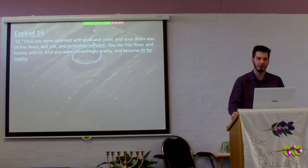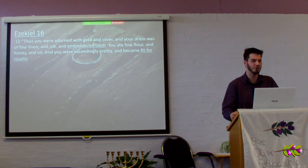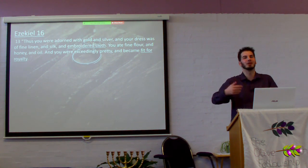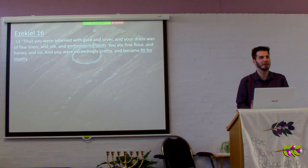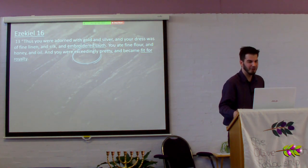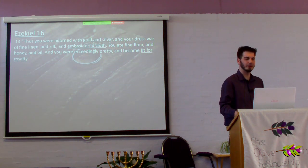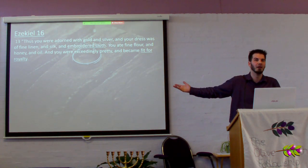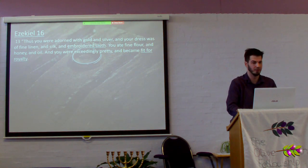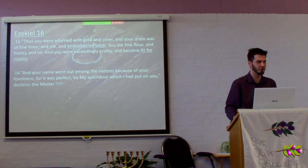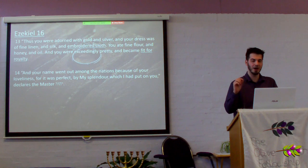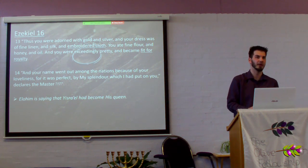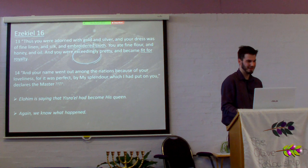Ezekiel 16: 'Thus you were adorned with gold and silver, and your dress was fine linen and silk and embroidered cloth' — a luxurious dress. We lose this because we can just buy cloth, but back then to have it embroidered took a lot of time and money. 'You ate fine flour, honey, and oil, and you were exceedingly pretty and became fit for royalty.' Who's the king? Yah. He's saying you were fit to become a queen. 'Your name went out among the nations because of your loveliness, for it was perfect by my splendor which I had put on you.' Elohim is saying that Yisrael had become his queen — and she threw it in his face.